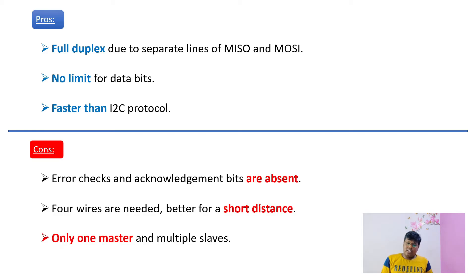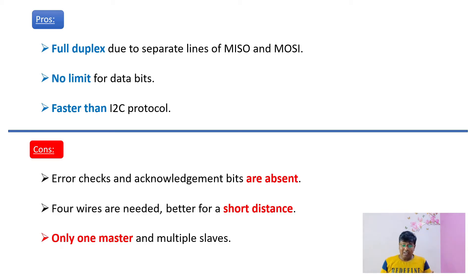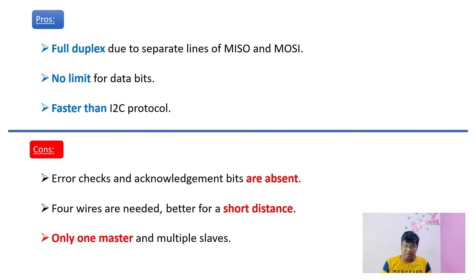Another disadvantage of SPI is that it requires four wires, making its cost higher than UART and I2C. The third disadvantage is that only one master is allowed in SPI communication, though there can be n number of slaves. This concludes the pros and cons of SPI communication protocol.